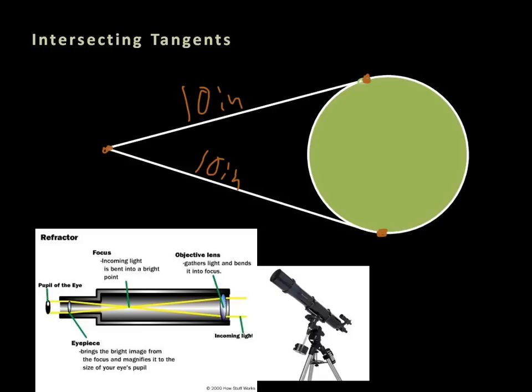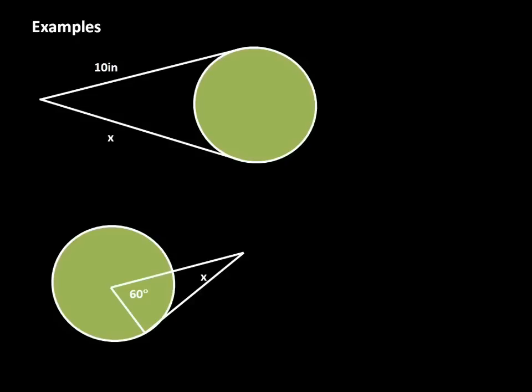Let's look at examples with tangents. Here we have two intersecting tangents — they intersect the circle at two points and meet outside. One side is ten inches long. Because intersecting tangents from an external point are equal, the missing side is also ten inches.